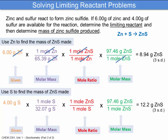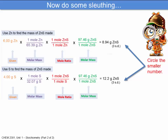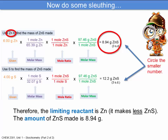We've done similar stoichiometry to what we've done before — we've just done it twice, once for each of the reactants. Now we need to figure out which is the limiting reactant. We circle the smallest number out of the two values for zinc sulfide. The 8.94 grams of zinc sulfide produced from the 6.00 grams of zinc is smaller, so the limiting reactant is zinc. Therefore, the maximum amount we can produce is 8.94 grams of zinc sulfide.